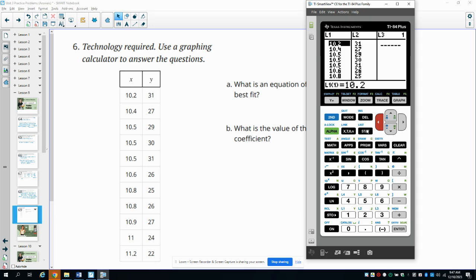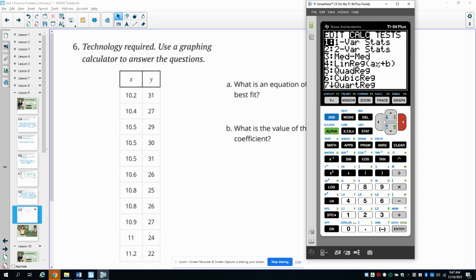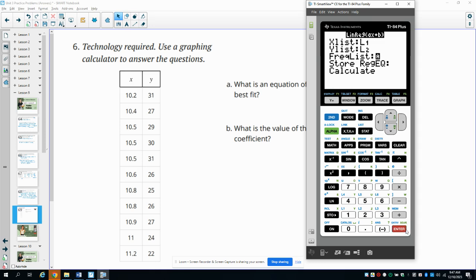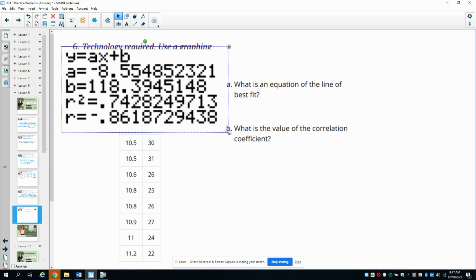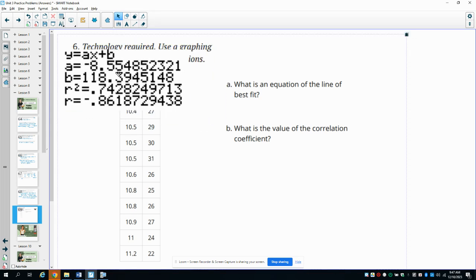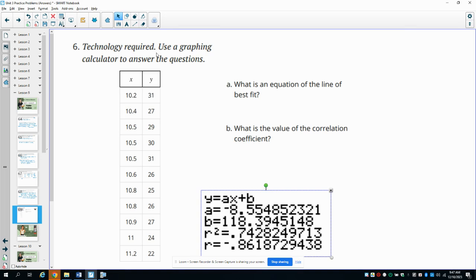Then to get the line of best fit, you go back into the stat menu, you go over to calculate and you select option number four, the linear regression. Then you click enter until it calculates it for you and you get this information. And then you can write your line of best fit using this information.